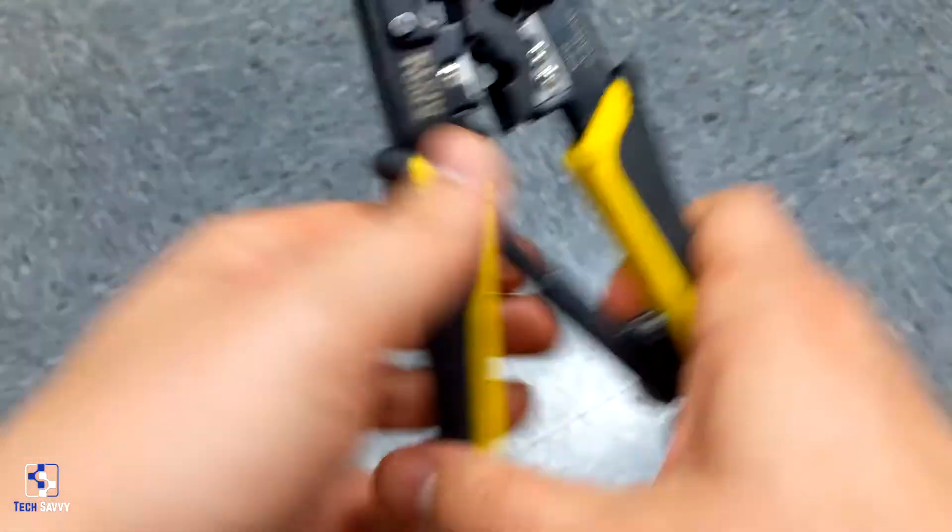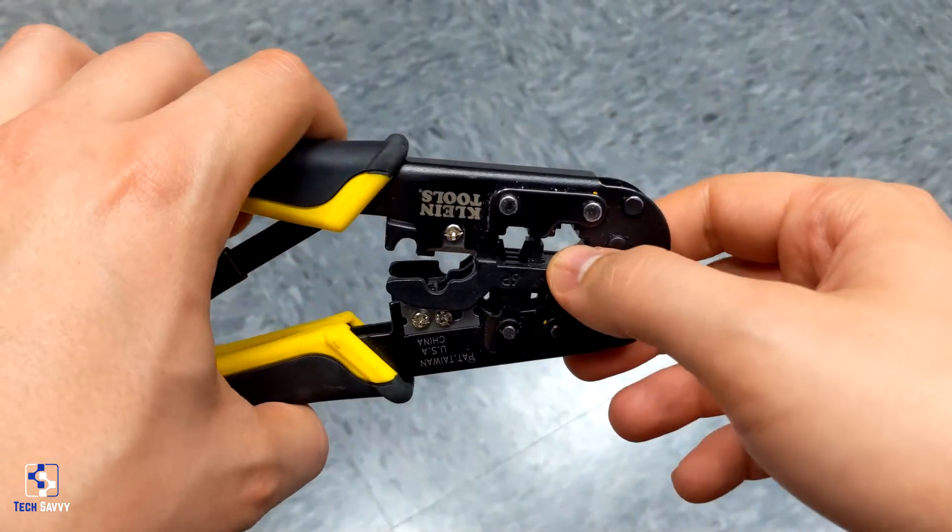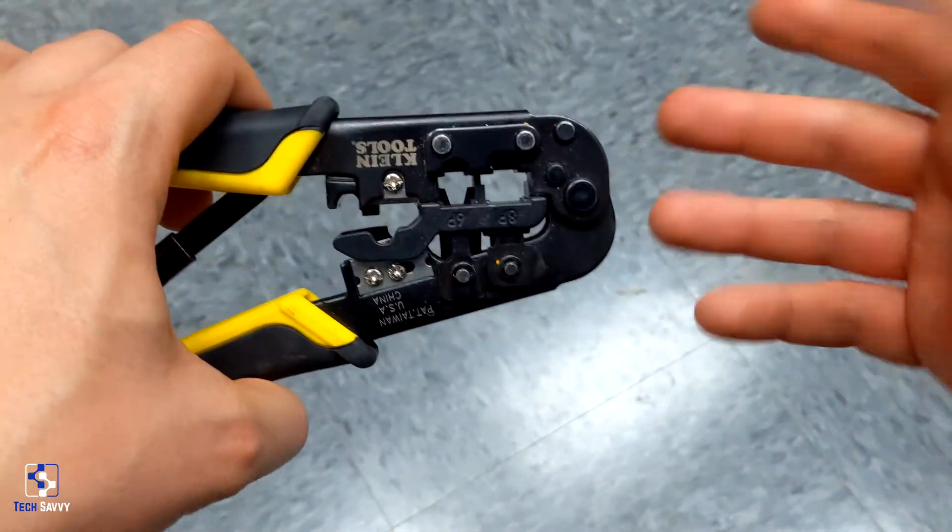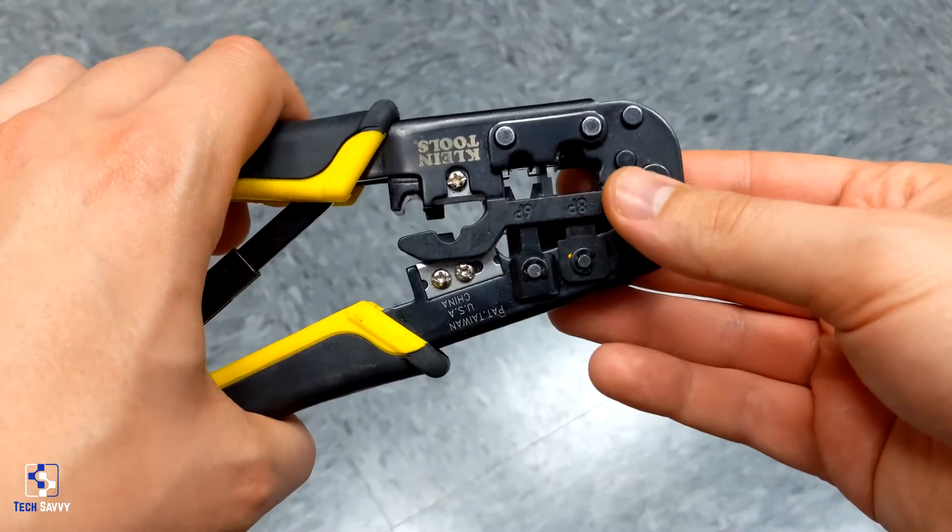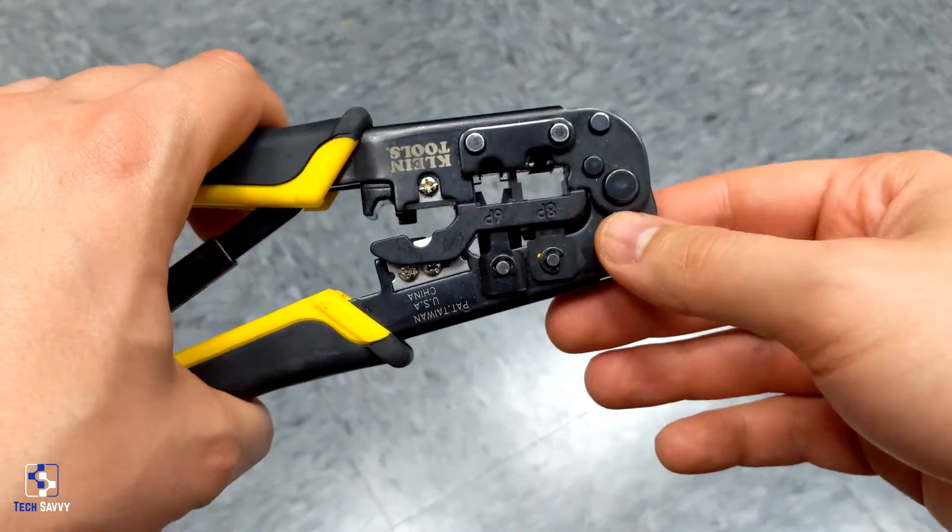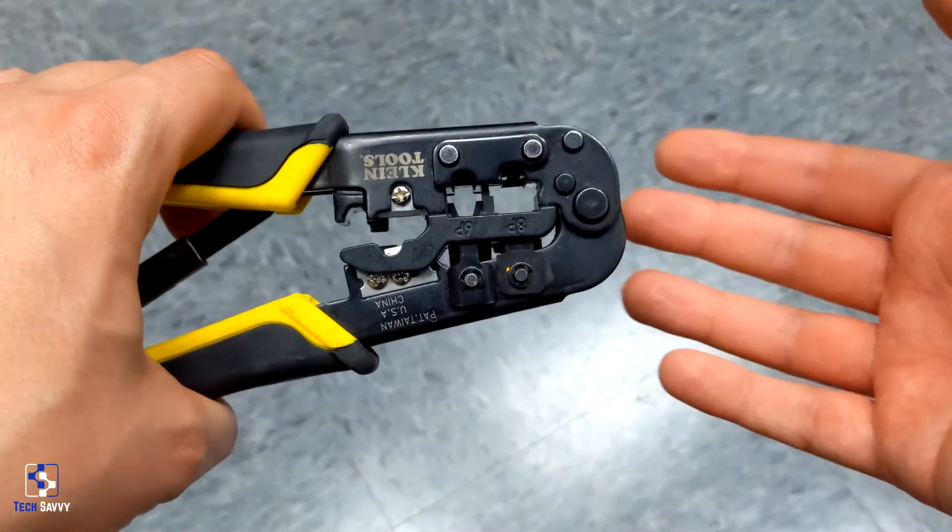You're definitely going to need a crimping tool. This one supports RJ45 and RJ11 for phone jacks, but a tool like this works really well. It even has blades in it, I just don't like to use it that much. But you definitely need this to crimp the connectors on.